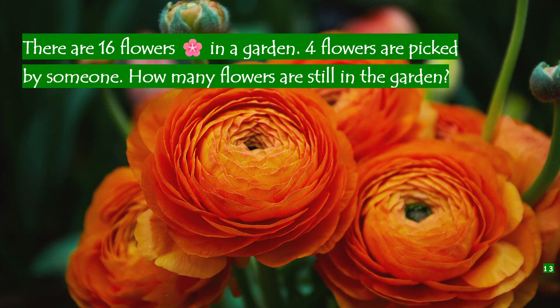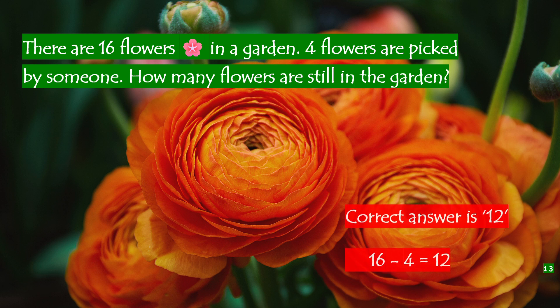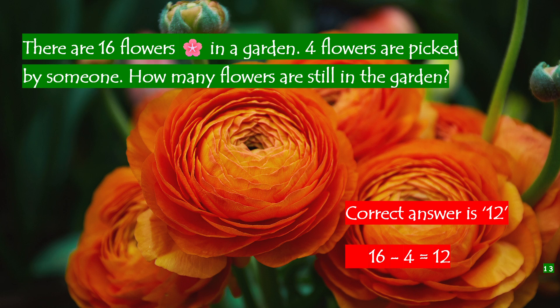There are sixteen flowers in the garden. Six flowers are picked by someone. How many flowers are still in the garden? The correct answer is twelve. Sixteen minus six is twelve.